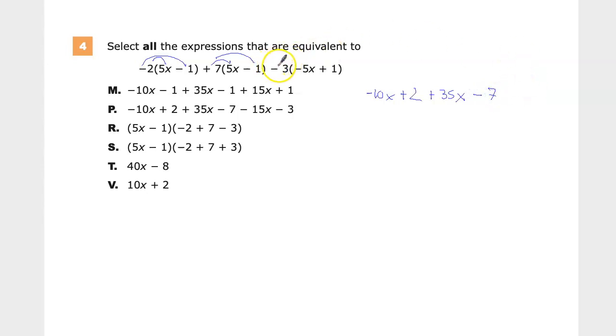Then I'll treat this as a negative 3. Because if I'm adding and subtracting, I treat it like it's a subtraction sign. If I'm multiplying or dividing, I treat it like a negative. So negative 3 times negative 5 is positive 15x, and negative 3 times negative 1 is negative 3.